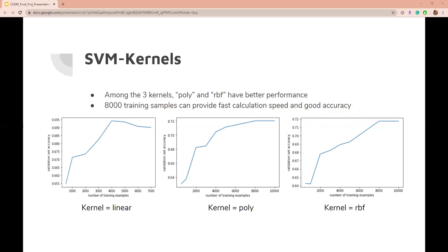SVM training is super slow with a large number of data points. Training in 8000 samples provides the best trade-off between accuracy and speed.